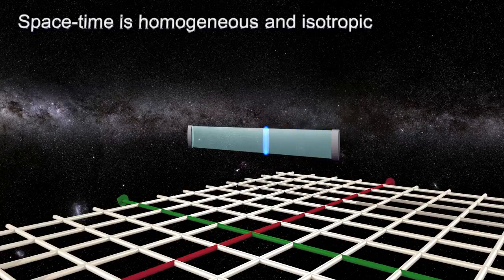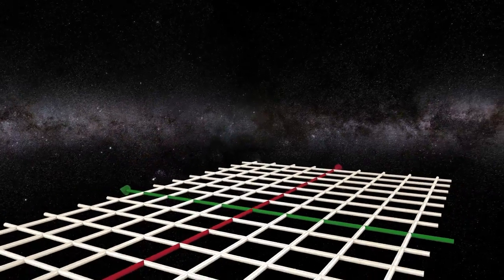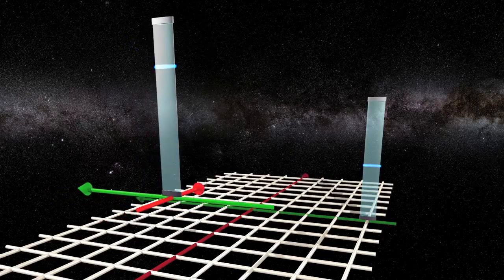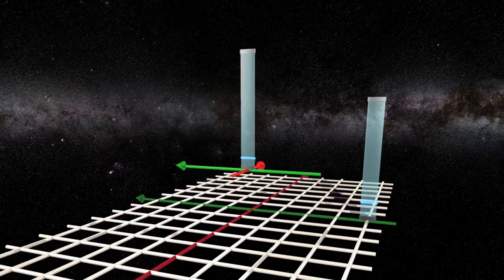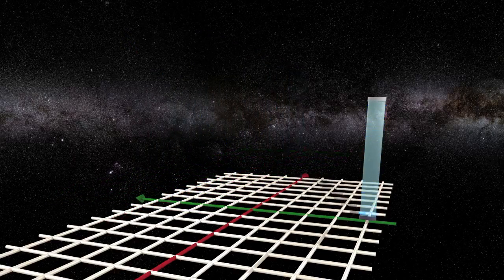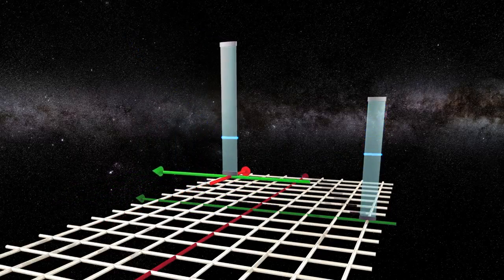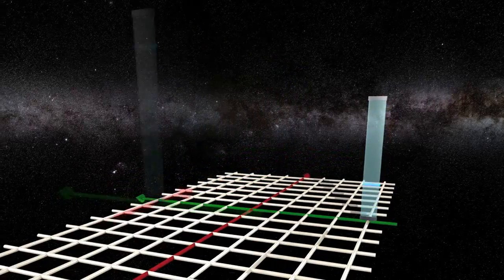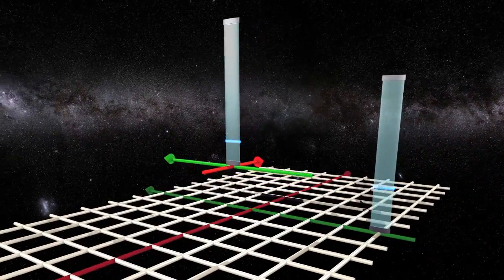But something strange happens to a clock in motion. Let us take one clock at rest and one that moves at constant velocity. Let both be oriented perpendicular to the direction of motion. The moving clock appears to run at a slower rate compared to the clock at rest.